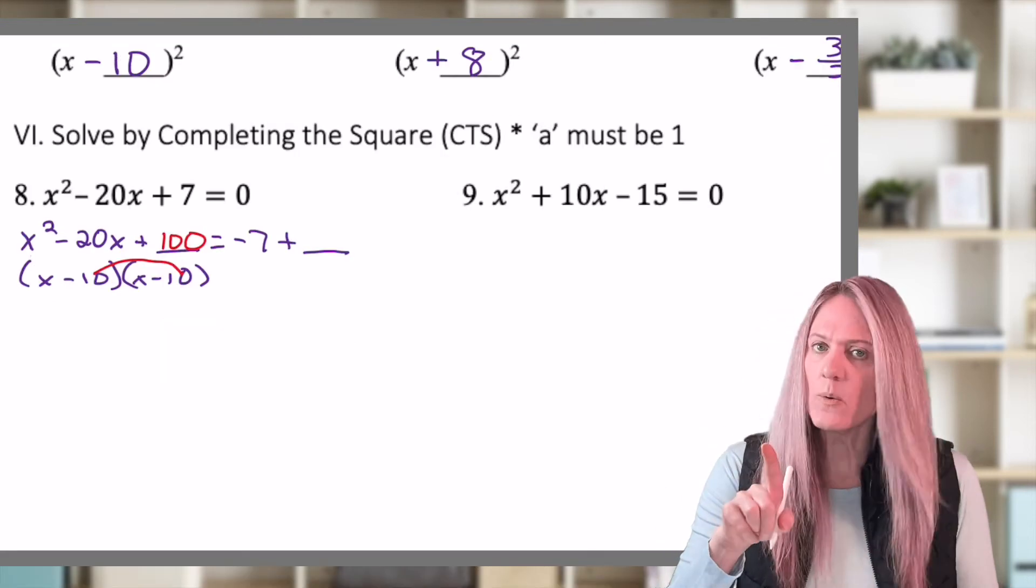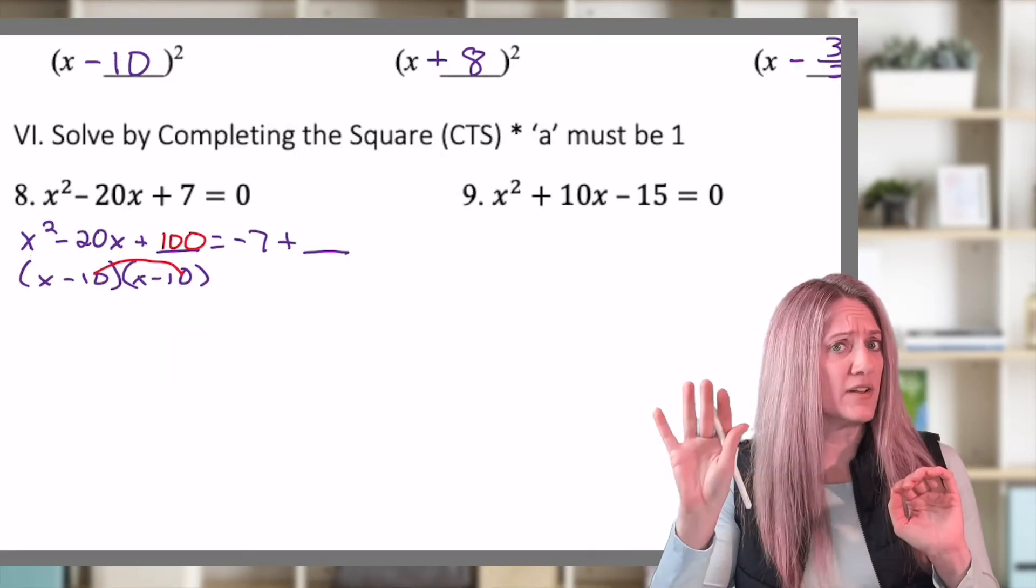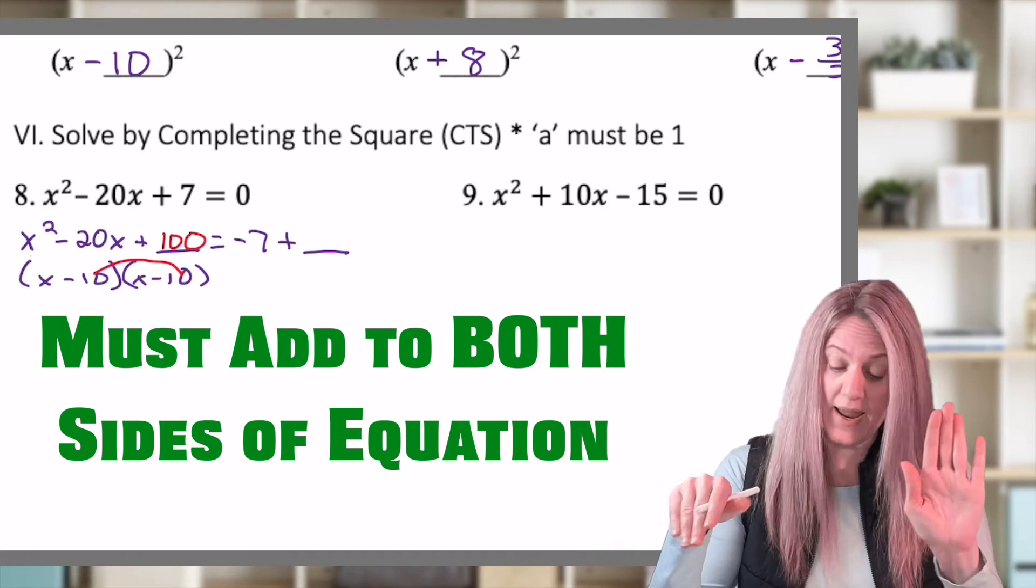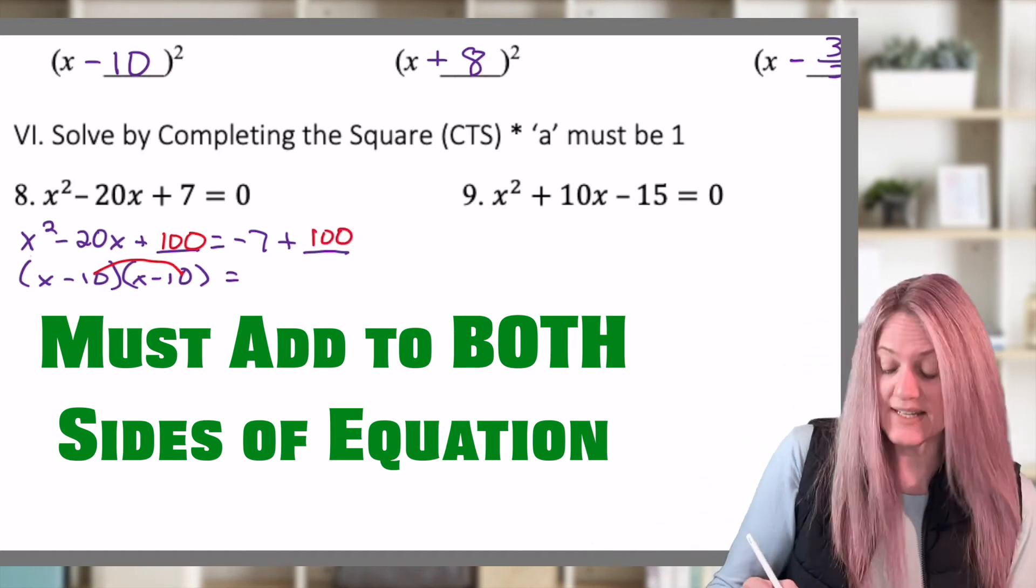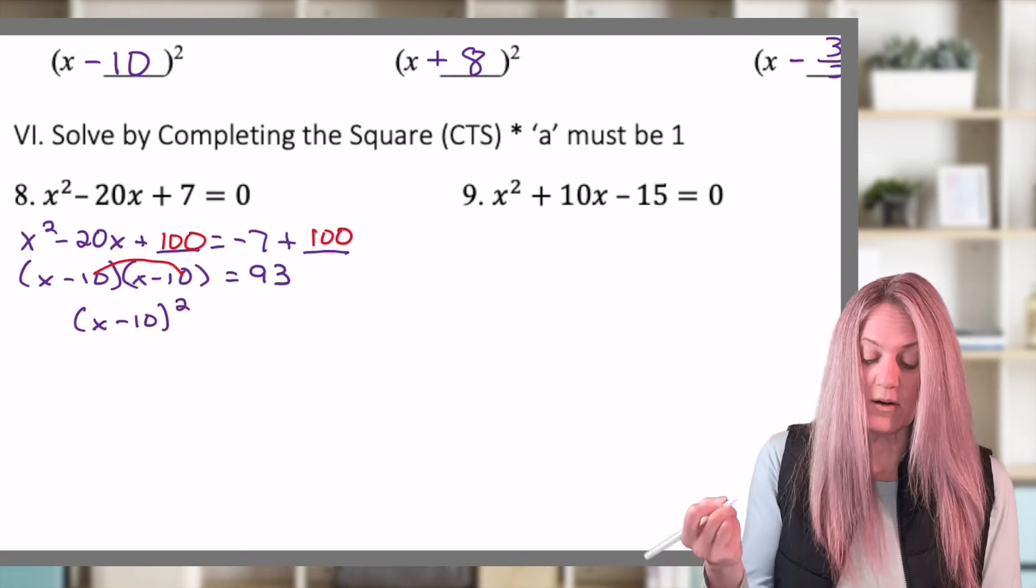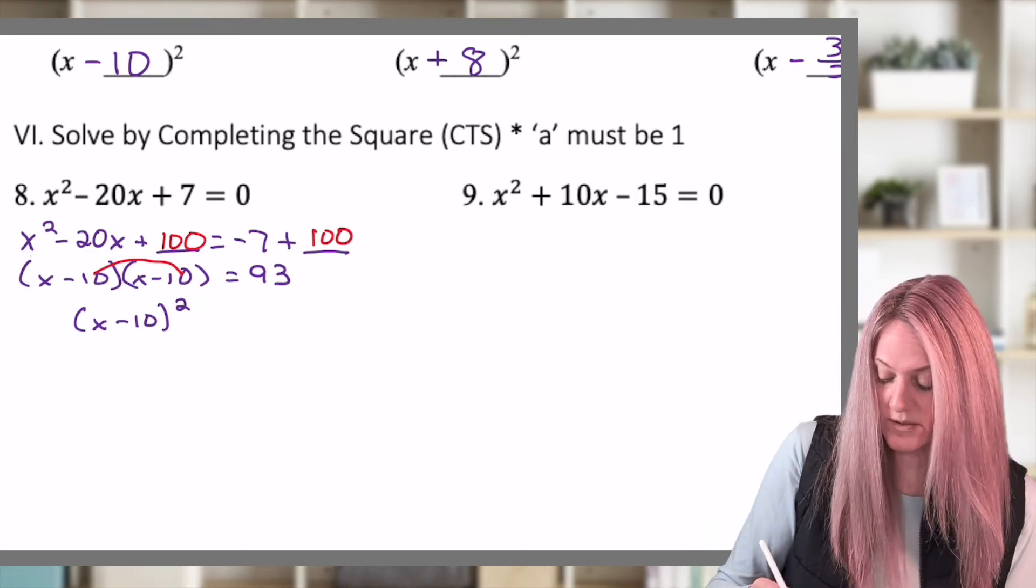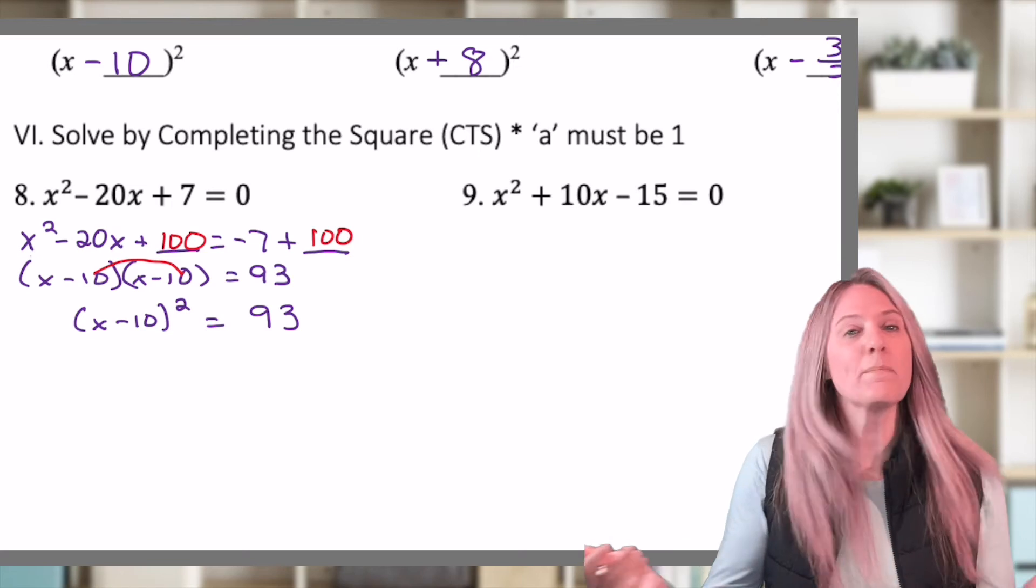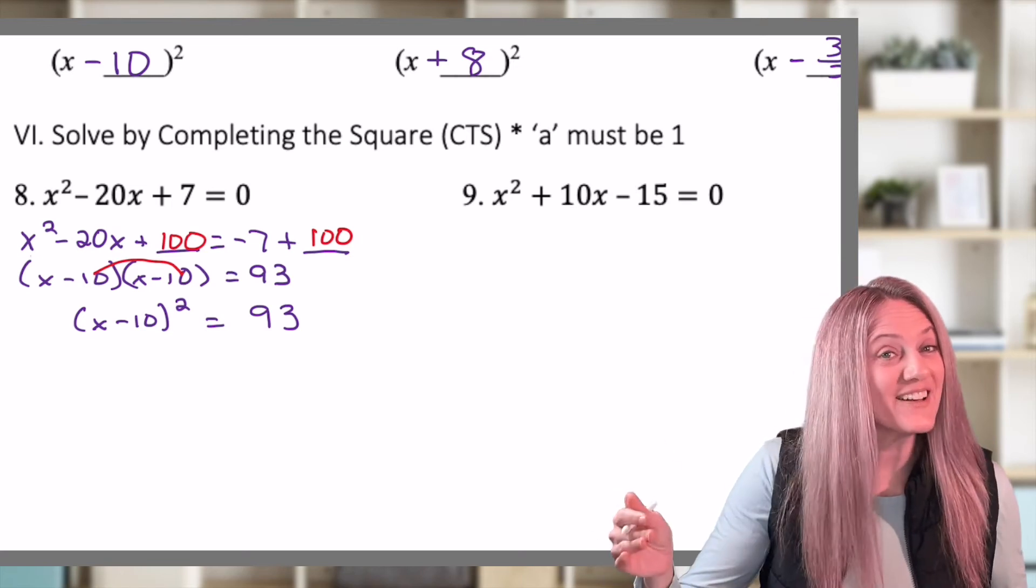But whoa, whoa, whoa. We have an equation now. If I add something to the left, I better add it to the right. Negative 7 plus 100, 93. Let's collapse our binomial into x minus 10 quantity squared equals 93. Then we're back to just square rooting and we're set to go.